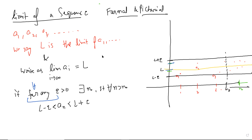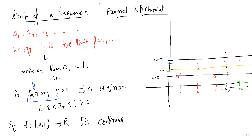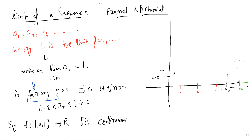Now let's look at the connection with continuous functions, as given in the notes. Let's say f is a function from [0,1] to ℝ, and f is continuous. I won't define continuous functions rigorously since it's not in the notes, but let's see roughly what it means and then understand the connection with sequences. The domain is [0,1] — taken just for convenience; what I'll say works for anything.